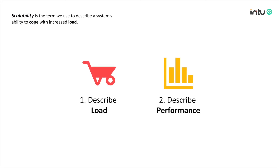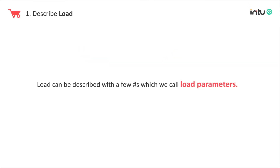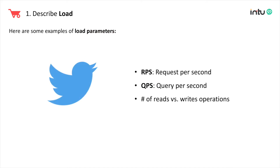There are two things you need to describe before assessing the scalability aspect of a system. First, you need to describe what types of load you're dealing with. Secondly, you need to describe which performance of your system we need to monitor with respect to the load. Load can be described with a few numbers which we call load parameters, and these parameters heavily depend on your system architecture. If you're building a system similar to Twitter, you'll be interested in how many requests or queries your system gets per second, or the number of reads versus number of writes operations — which tells you the ratio between people posting tweets versus people viewing the home timeline.